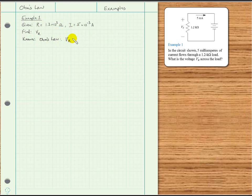V sub R that we're looking for is going to be the current through the resistor times its resistance. So we're ready to use that to solve the problem. We have V sub R is equal to I times R, and that's equal to the current was 5 times 10 to the minus 3 amps, that's 5 milliamps, times the resistance was 1.2 kilohms, that's 1.2 times 10 to the third ohms.